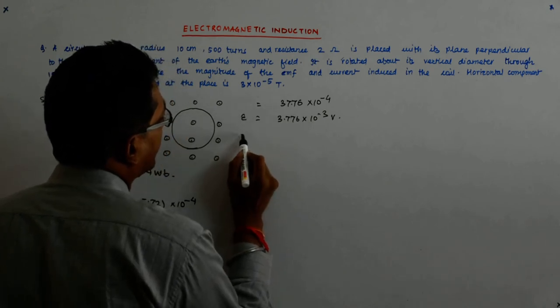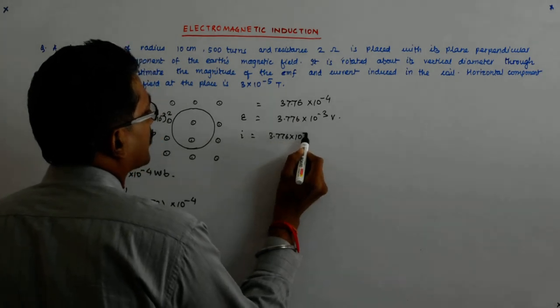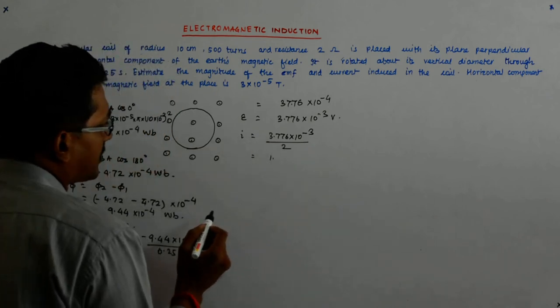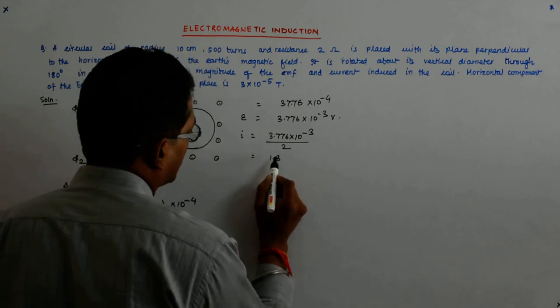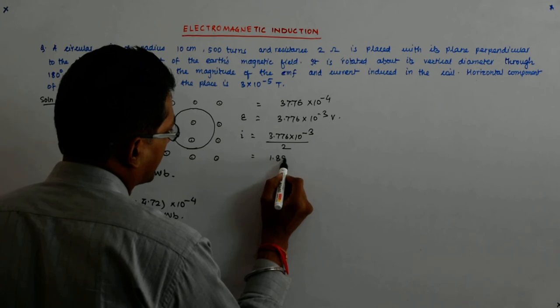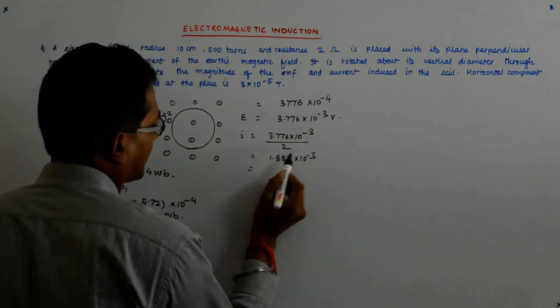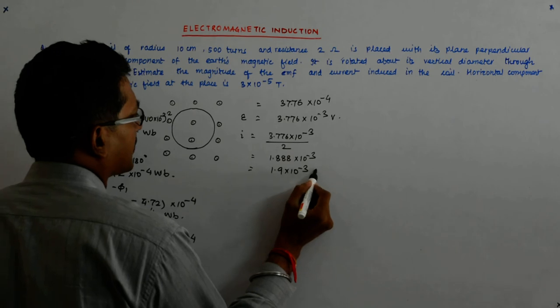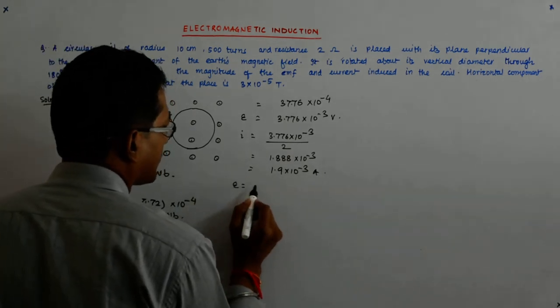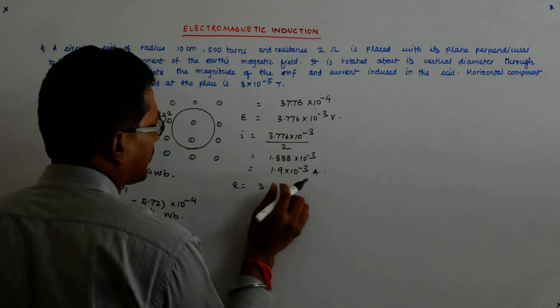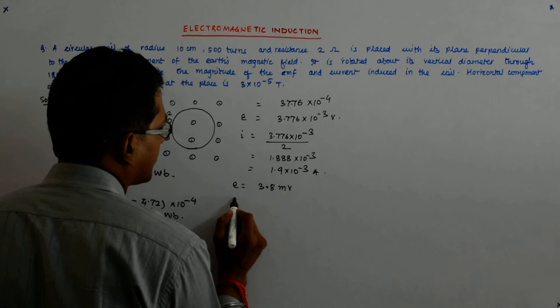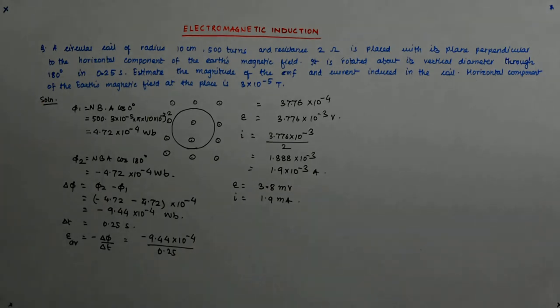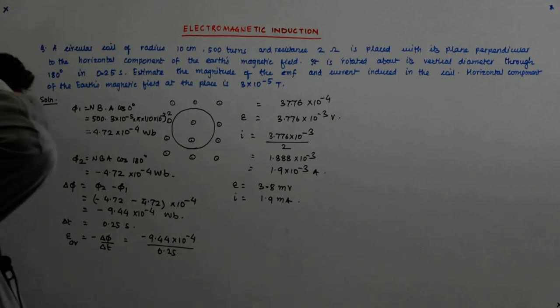So this is my EMF, and my current I will be 3.776 × 10^-3 divided by 2, which is 1.888 × 10^-3. Obviously, I will not be allowed so many significant figures, so maybe 1.9 × 10^-3 amperes. So your current is about 3.8 millivolts and the current is 1.9 milliamperes.